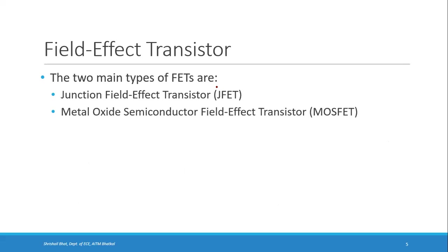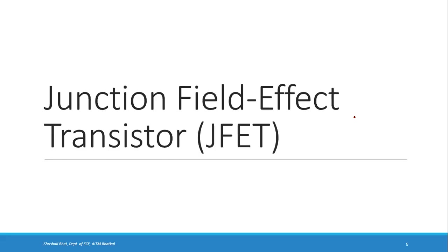Based on how they are formed and the operation of FET, there are two main types: one is JFET, that is Junction Field Effect Transistor, and the other is MOSFET, that is Metal Oxide Semiconductor Field Effect Transistor. We are going to study both of these one by one, starting with the Junction Field Effect Transistor.